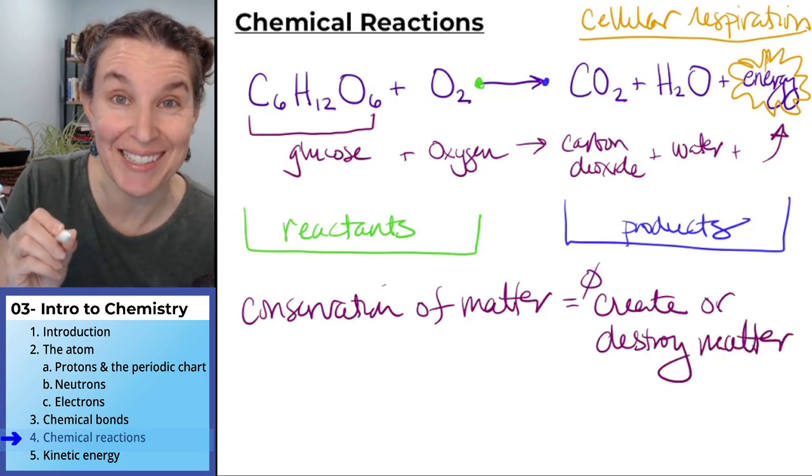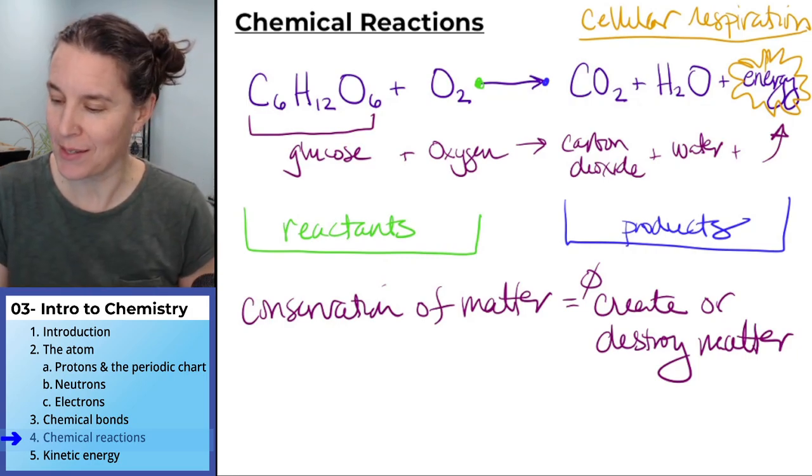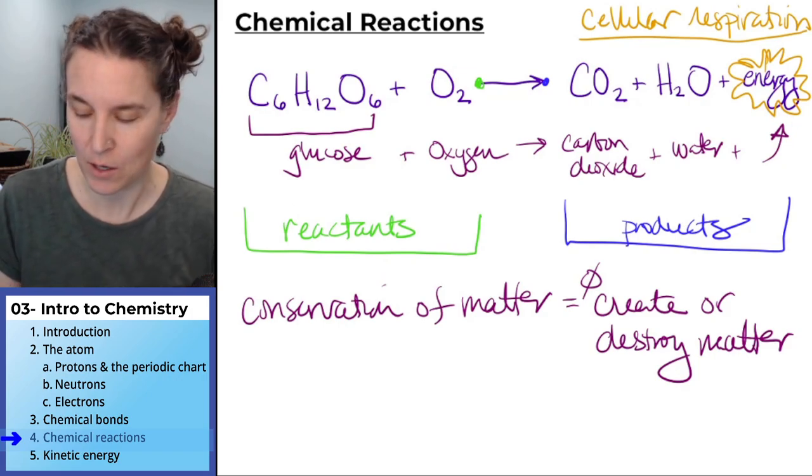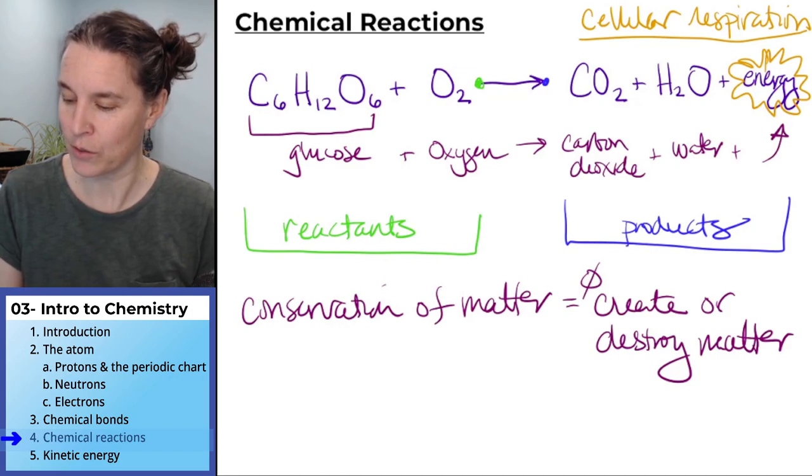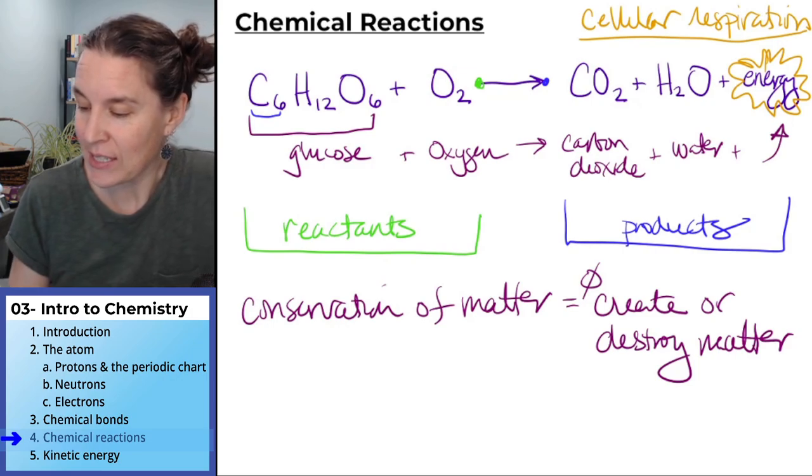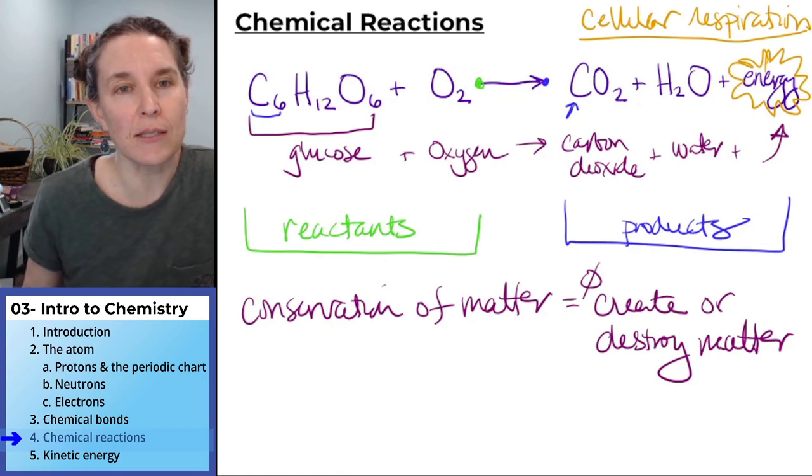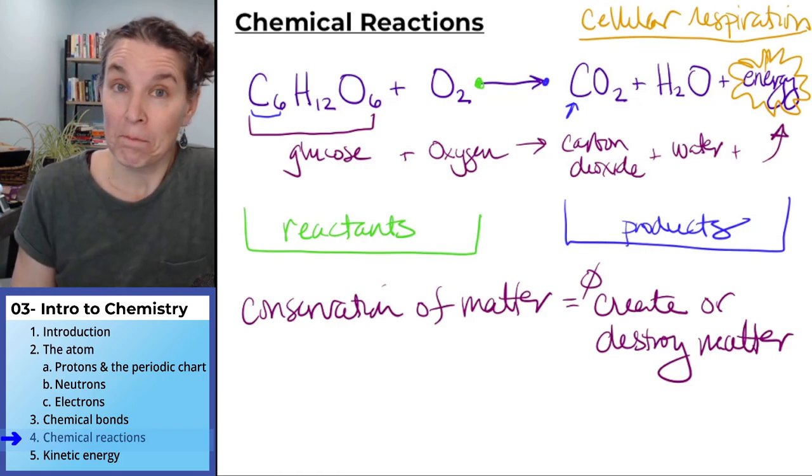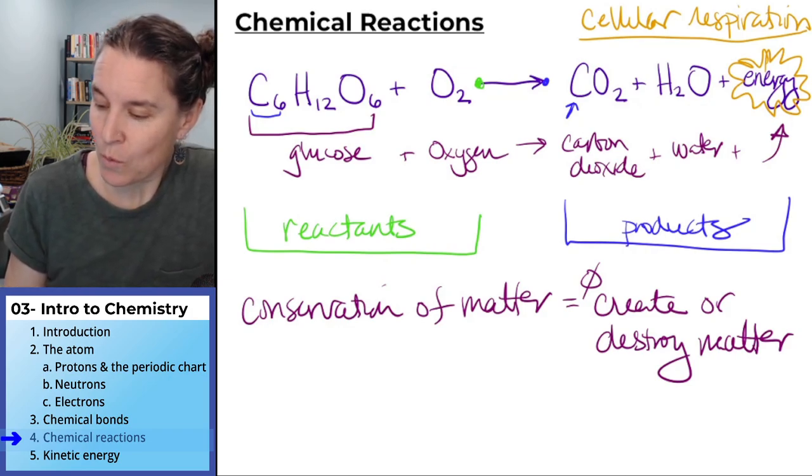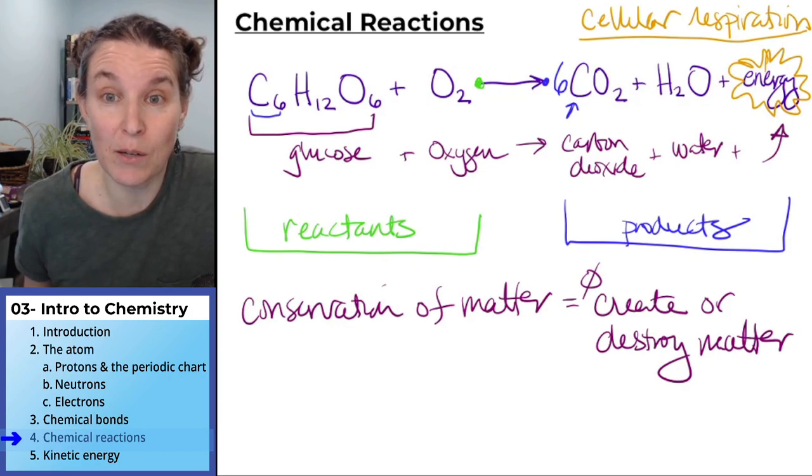And what this means is that in our chemical reaction, if we start with six carbon atoms in our glucose molecule right here, on the other side, we have to have six carbon atoms. I only see one. What do you think that means? For each molecule of glucose that goes through cellular respiration, we're going to end up with six molecules of carbon dioxide that get blown off.